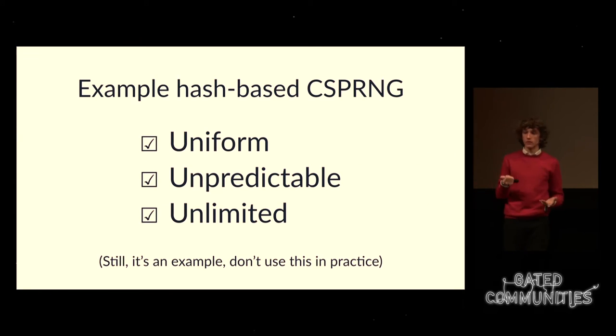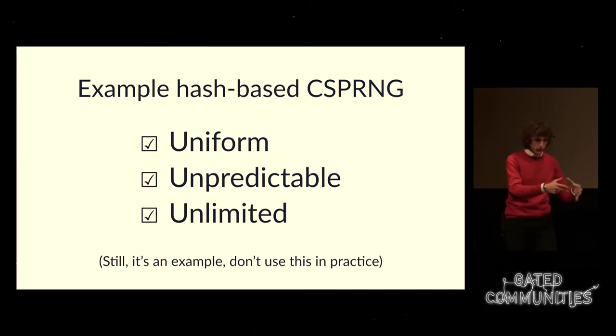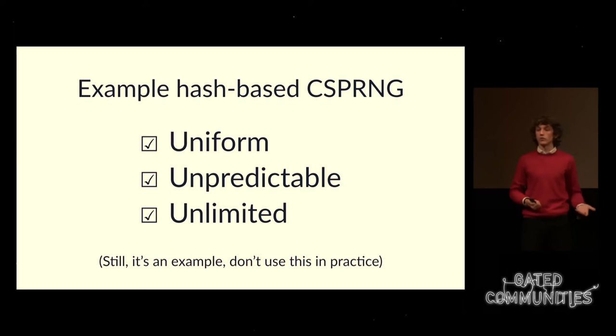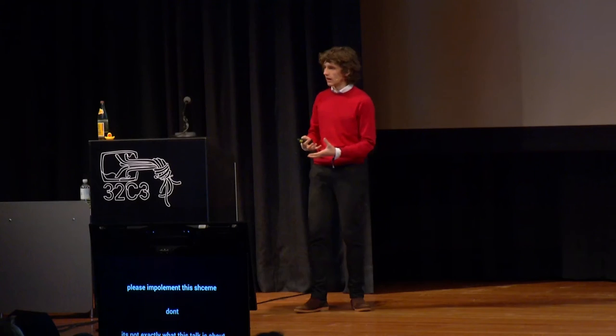Did we get what we want? It's uniform — hash function outputs are uniform. It's unpredictable — the only way an attacker can figure out the output is to observe or brute-force all the hard disk timings and user inputs, which is impossible for a third party. And it's unlimited — we can keep incrementing that counter forever. Please don't go implement this scheme and say I told you it was okay. If CSPRNGs can turn unpredictable events into an unlimited stream of random bytes, and the kernel observes all those unpredictable events, doesn't it make sense to just put a CSPRNG in the kernel?